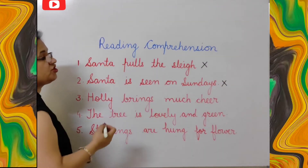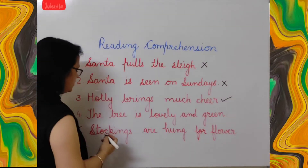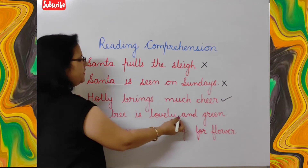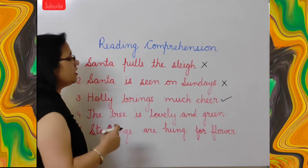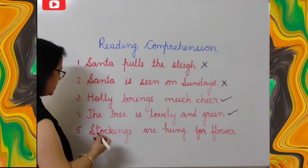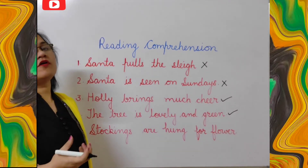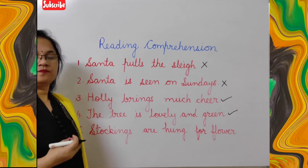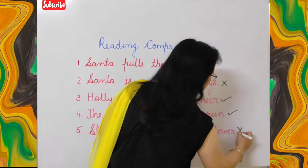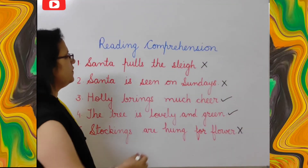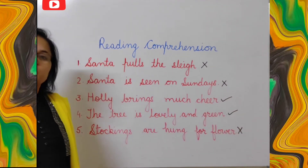Holly brings much cheer — yes, it brings cheer, so tick on it. The tree is lovely and green — yes, it is lovely and green, so tick on this, it is correct. Stockings are hung for flowers — no, stockings are hung for gifts, so cross it. So students, you will cross the first two statements, tick the middle two, and then cross the last one.